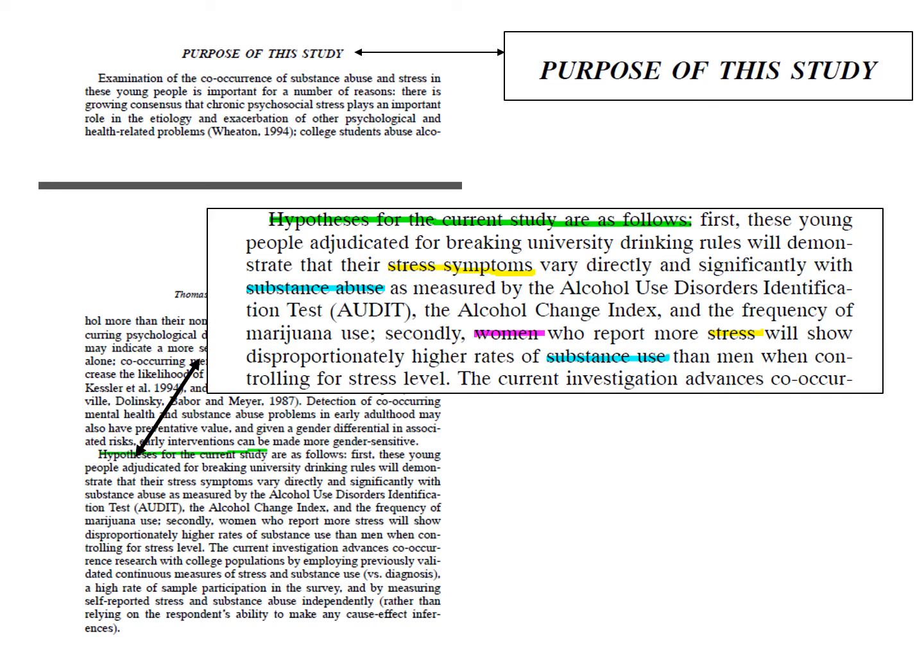That said, I hope you identified stress symptoms, substance abuse, and gender as the three areas of focus. Your article summary worksheet can summarize the hypothesis like the model in this slide. The numbers in brackets are the page numbers where I found the information. Sometimes it's helpful to have that if I want to go back and read more to check my notes.